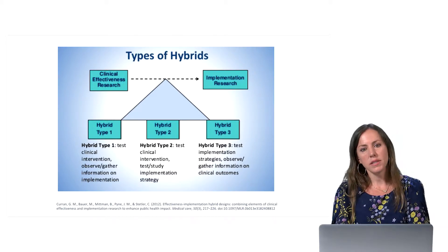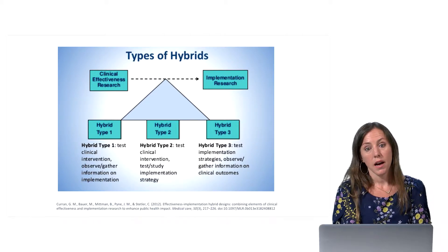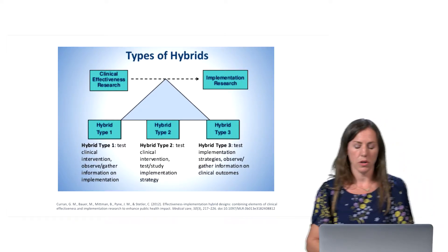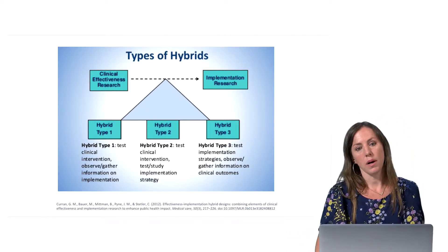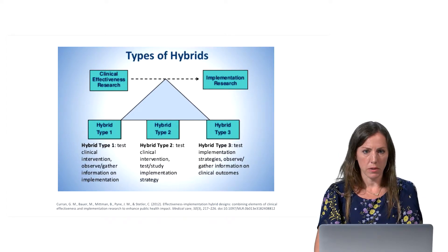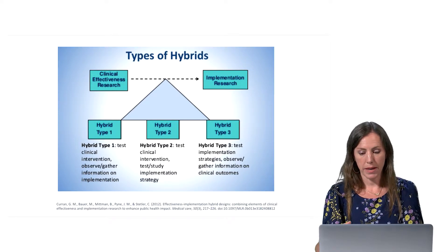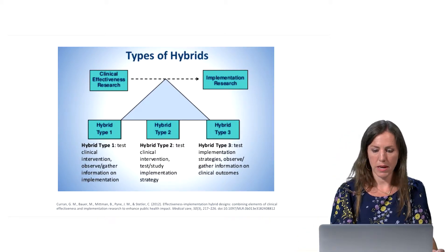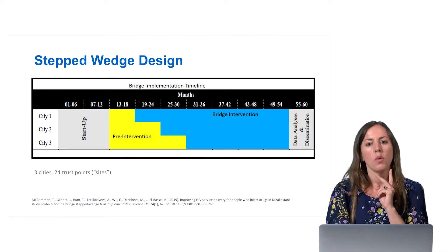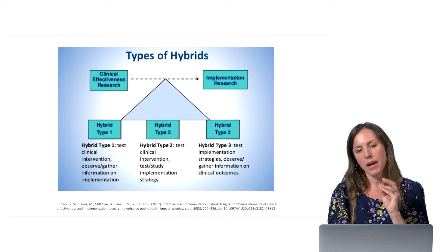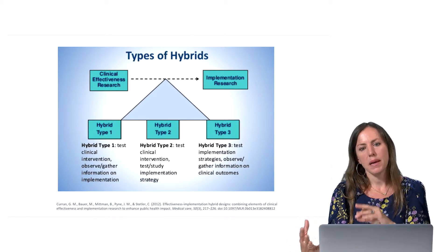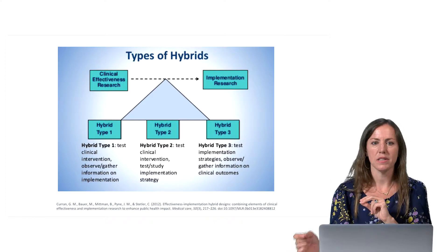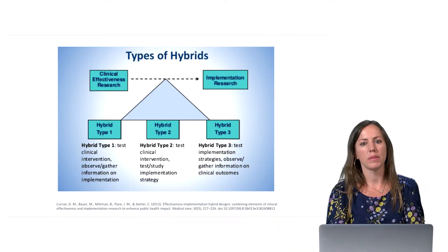Hybrid two is still testing whether the intervention works — for example, is this food security intervention effective? — but also testing at the same time the best way to deliver it. Is it better to deliver a food insecurity program using technical assistance and training, or using a community champion model? So you're looking at both whether the program works and how to embed it. Hybrid three is really focused on testing implementation and understanding implementation strategies — similar to a stepped wedge design — and you still might measure impact on health behaviors and health outcomes, but that might be secondary. There's a range of designs to ensure we're thinking about implementation from the beginning, not just embedding those questions at the end.